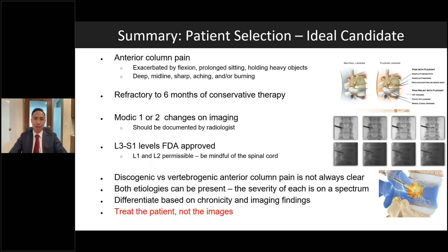To find the ideal candidate for basal vertebral nerve ablation: they must have anterior column pain exacerbated by flexion, prolonged sitting, and holding heavy objects; they should be refractory to six months of conservative therapy; and they should have modic type 1 or 2 changes on imaging documented by a radiologist. The procedure is FDA approved for L3 to S1, though L1 and L2 are permissible with mindfulness of the spinal cord. Note that discogenic and vertebrogenic anterior column pain can coexist and be challenging to delineate — differentiate based on chronicity and imaging, and treat the patient, not the imaging.